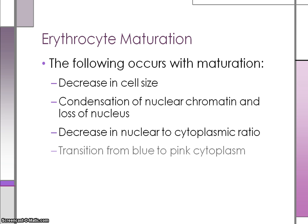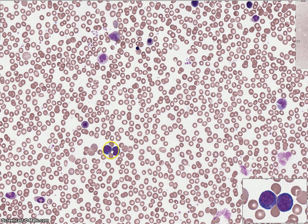Early on in development the cytoplasm color is deep blue or basophilic. As the cells produce more hemoglobin, the cells transition to a purple-gray color and finally to a salmon pink color at the fully mature stage.